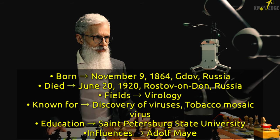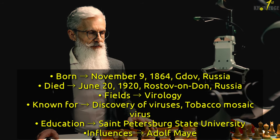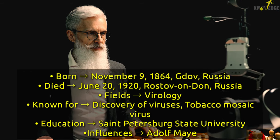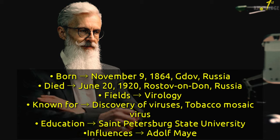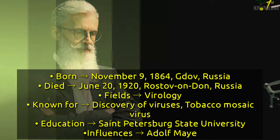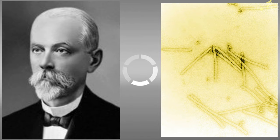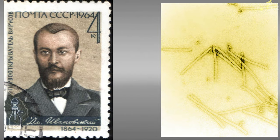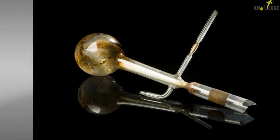Dmitry Ivanovsky, a Russian microbiologist, was born on November 9, 1864. Ivanovsky is one of only two biologists to have the honor of discovering a virus. In 1890 he tried to find the cause of the tobacco mosaic disease. From the affected leaves he prepared a solution containing the infectious agent and made a new type of filter made of porcelain, called a Chamberland filter.